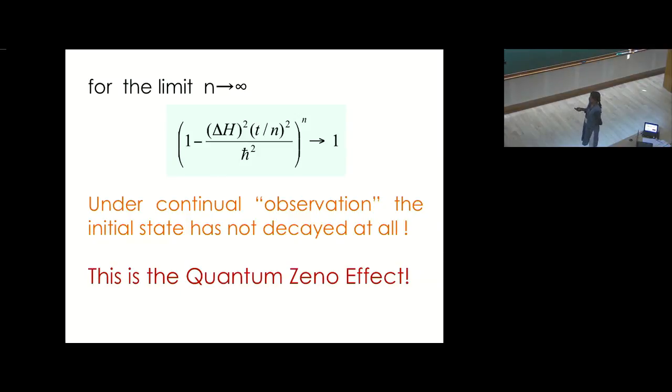Under the continual observation, the initial state has not decayed at all. So this is the quantum Zeno effect.